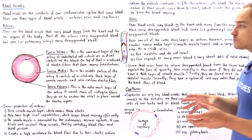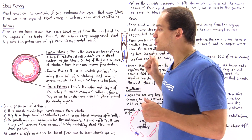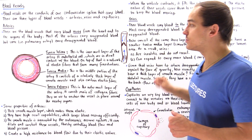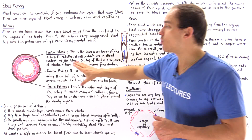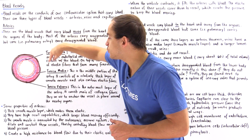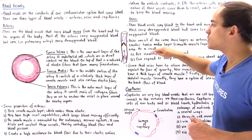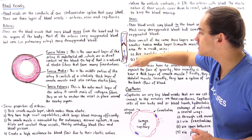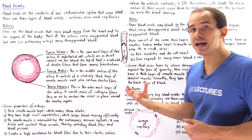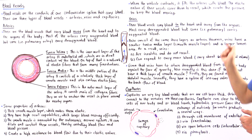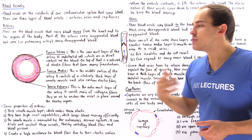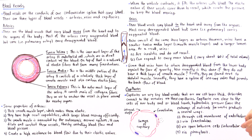So even though veins have the same three layers as arteries, they have a much thinner tunica media, and they also have a system of one-way valves to prevent the backflow of blood down the vein due to gravity.